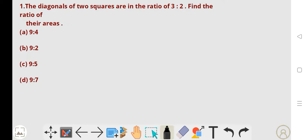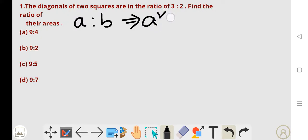We have one formula here. If the diagonals of two squares are in the ratio A is to B, then the ratio of the areas of two squares is A squared is to B squared.